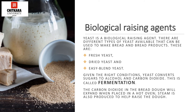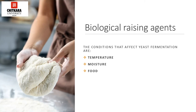The carbon dioxide gas in the bread dough will expand when placed in a hot oven, and steam is also produced to help raise the dough. The various conditions that affect yeast fermentation are temperature, moisture, and food. The best temperature range for yeast is between 25°C to 35°C. If the temperature is too high, the yeast cells are destroyed; if too low, the activity is slowed. Moisture is provided by the liquid in the dough, which should be at the correct temperature. Food is supplied by the starch in the flour.